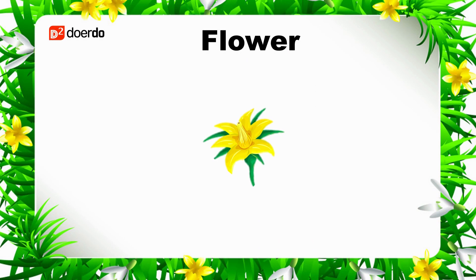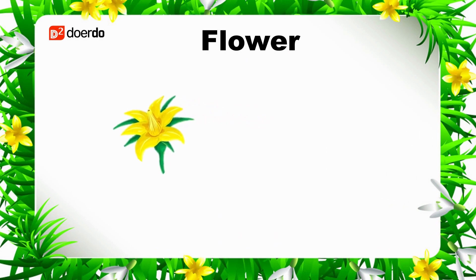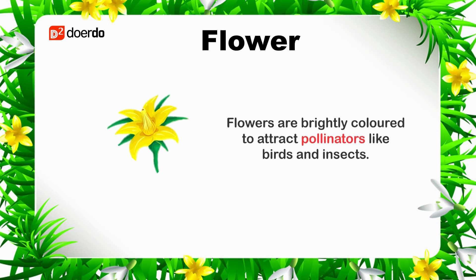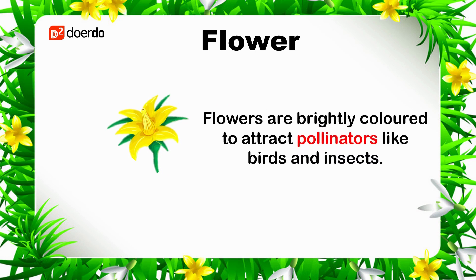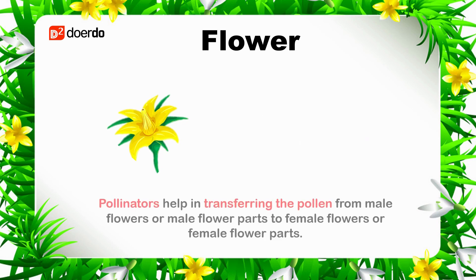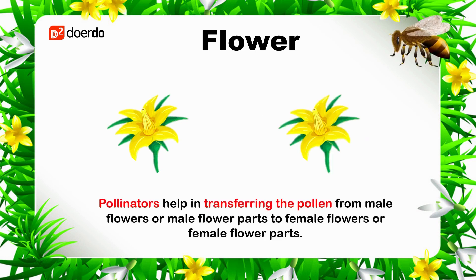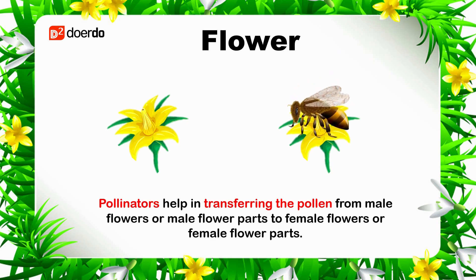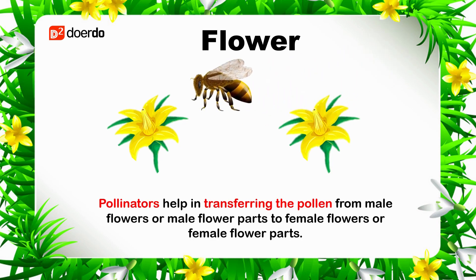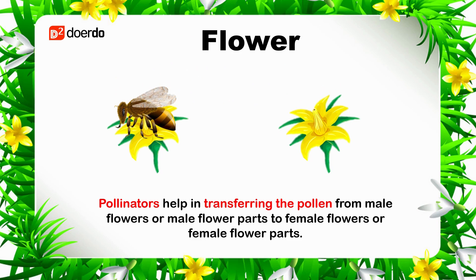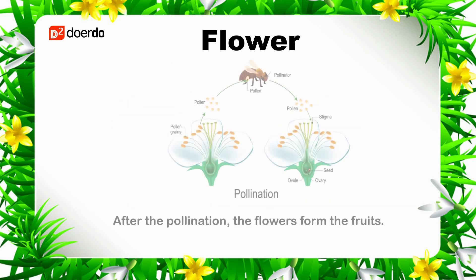Let us now move on to understand the functions of flowers. Flowers are brightly colored to attract pollinators like birds and insects. Pollinators help in transferring the pollen from male flowers or male flower parts to female flowers or female flower parts. After pollination, the flowers form the fruits.